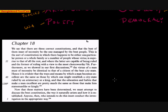So Aristotle writes, We say that there are three correct constitutions, and the best of them must of necessity be one managed by the best people. And this is the sort of constitution in which there happens to be either one particular person, or a whole family, or a number of people whose virtue is superior to all the rest.